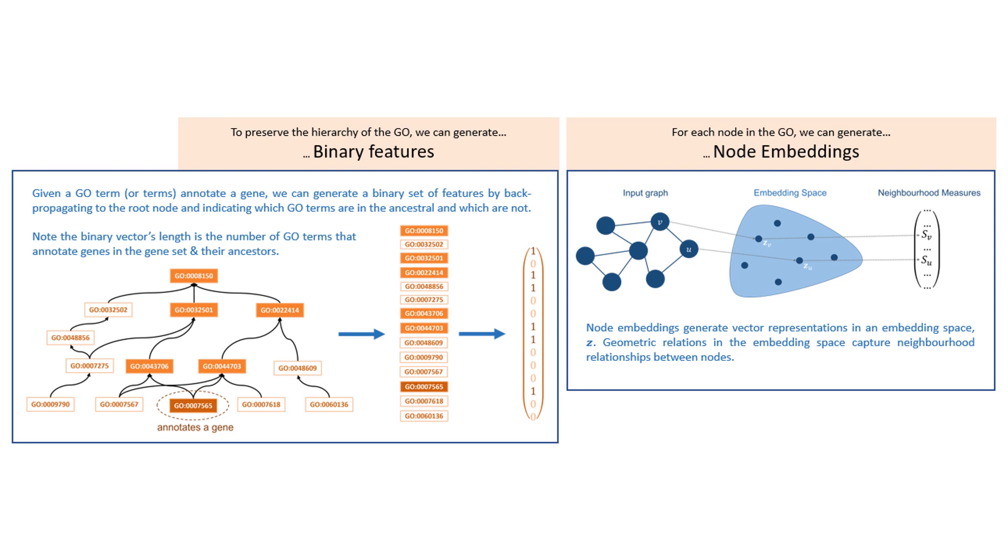Second, on the right, we can use node embeddings, which have successfully generated features for nodes from graphs for downstream machine learning tasks like the one we're about to do. They do so by casting the nodes of the graph into a vector space according to some similarity measure. This is demonstrated in the slides and the poster, and the geometric relations in the embedding space are supposed to capture some similarity or neighborhood relationship between these nodes.